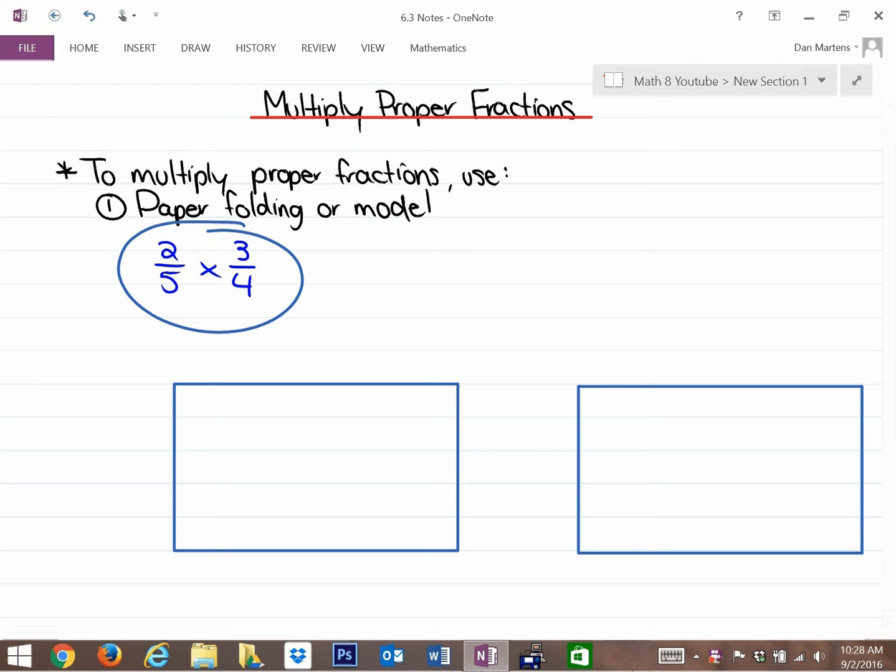There's two methods that are looked at in this particular case. One is called the paper folding method, and the other one is just using a model. You'll notice how similar they are as we get into them. So to multiply proper fractions, you could use paper folding or a model. I'll show you each of those, and you can choose which scenario of drawing these that you like a little bit better.